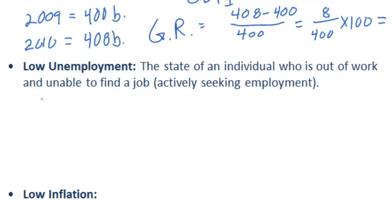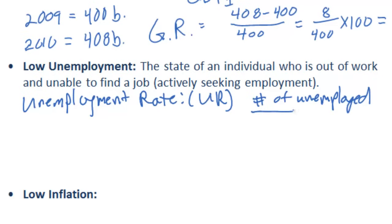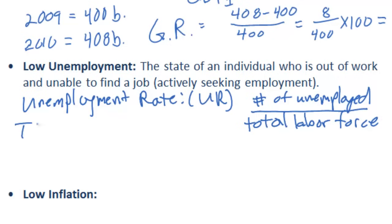Low unemployment is a worthy macroeconomic goal. To find the level of unemployment in a country, governments measure what is called the unemployment rate, abbreviated UR, which measures the number of unemployed people as a proportion of the total labor force. It's a very simple calculation: the number of people who are unable to find work but actively seeking work, divided by the total labor force. Let's define total labor force, as it is an important component of our calculation.